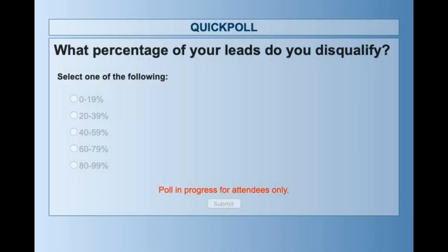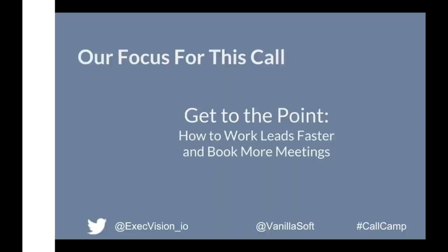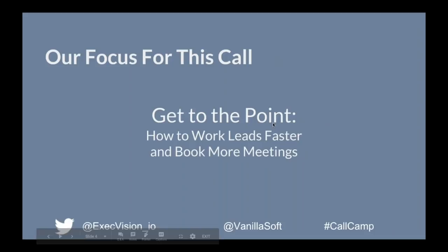Poll results: 30% say 20–39% of their leads are DQ'd, another 30% say 40–59% are DQ'd, and there are one or two outliers who say they DQ 80–99% of leads — we'd need to work with the marketing team on that. Most are right in the fat middle, the 30–60% range, which is what we expected. Thank you for voting. Moving on, we're going to break down real calls today to understand how to work leads faster and book more meetings.